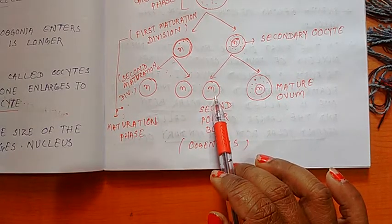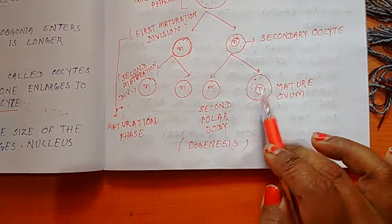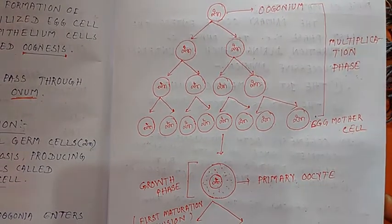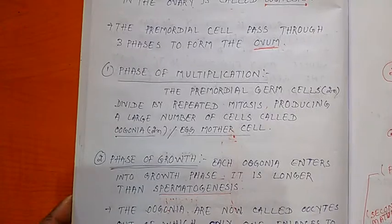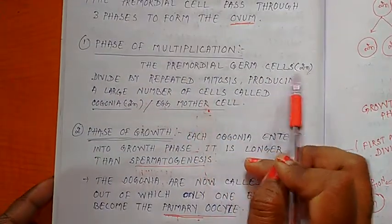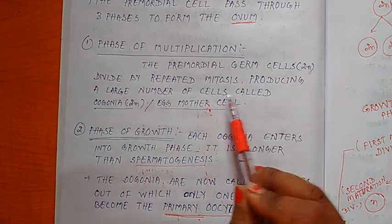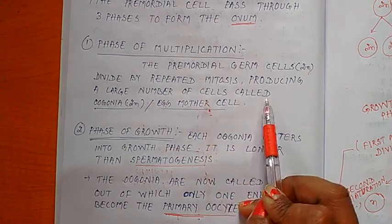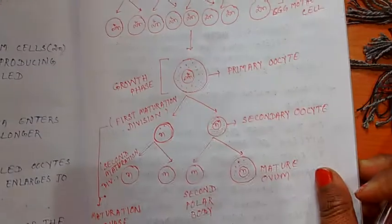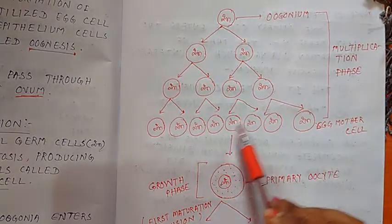The polar bodies disintegrate and the mature ovum forms the fertilized egg. Now let's discuss the first phase, that is the phase of multiplication. The primordial germ cells, which are diploid (2N), divide by repeated mitosis, producing a large number of cells called oogonia or egg mother cells. These oogonia are all diploid.